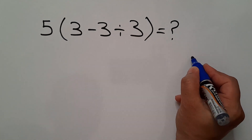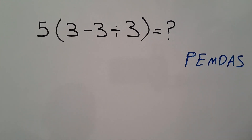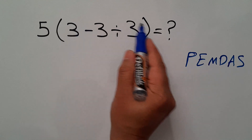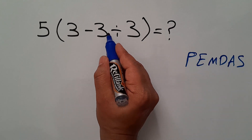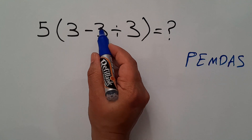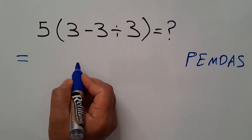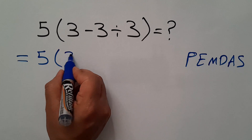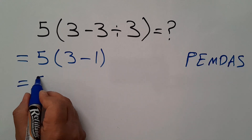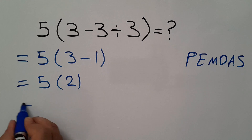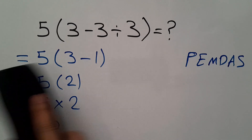Because according to the order of operations, which is PEMDAS, first we have to handle these parentheses. And inside these parentheses, we have this subtraction and this division. According to PEMDAS, first we have to handle this division: 3 divided by 3 equals 1. Then 3 minus 1 equals 2. So our expression equals 5 times 2, and 5 times 2 gives us our final answer of just 10.